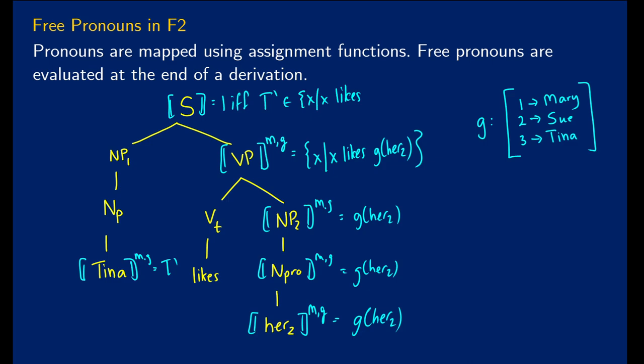But now we can evaluate it. So we take a look at our assignment function, we say, okay, her two points to Sue. So this is going to be true if Tina is in the set of X, such that X likes Sue. So what we did was we just waited to evaluate this at the very end and use this assignment function in order to evaluate that.